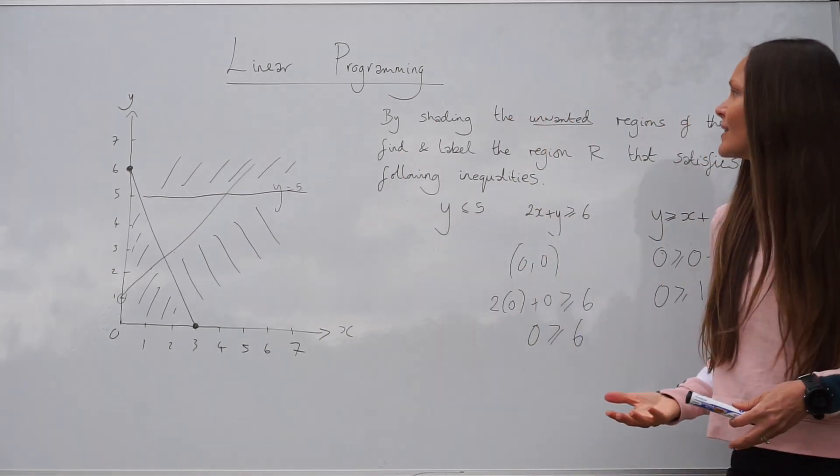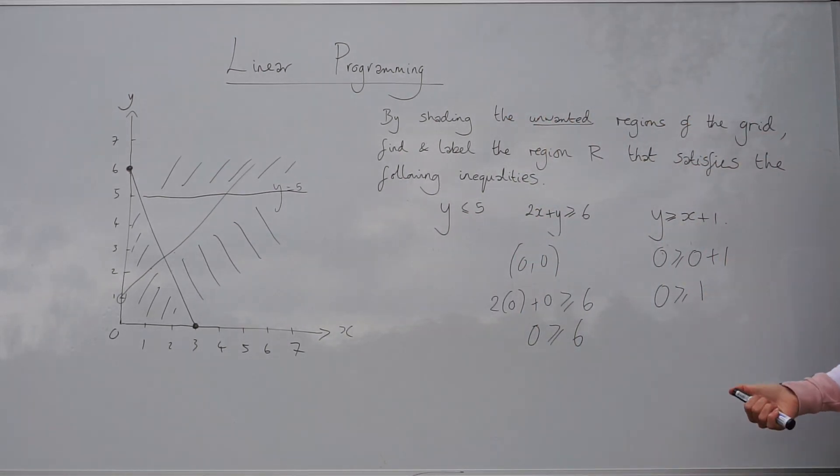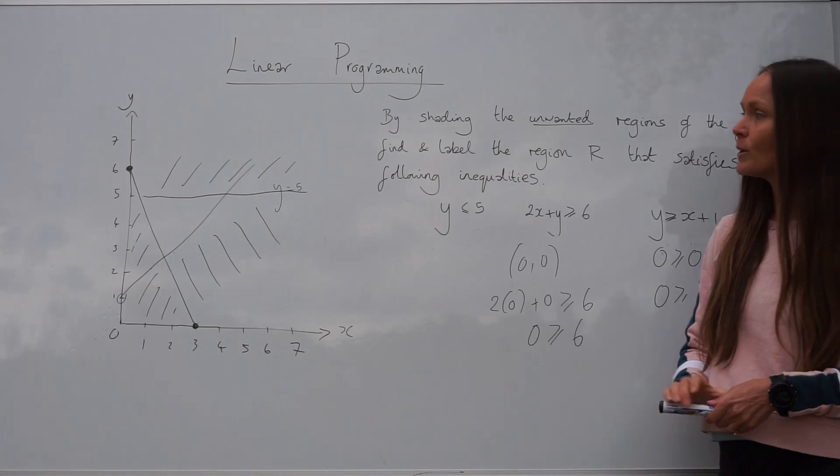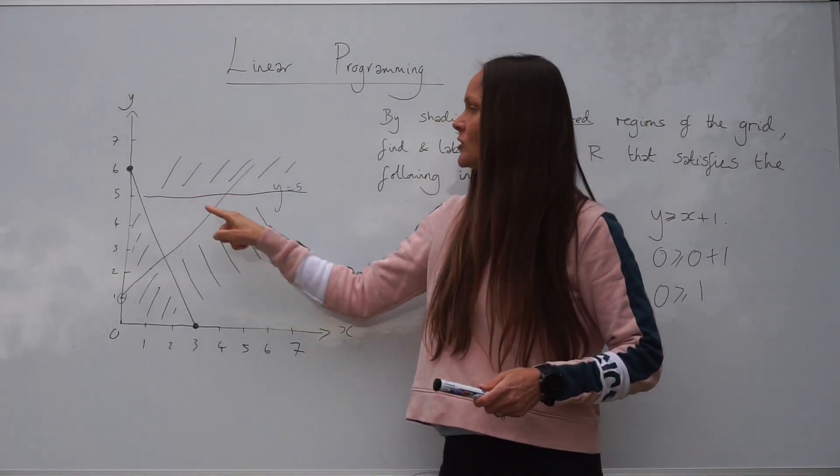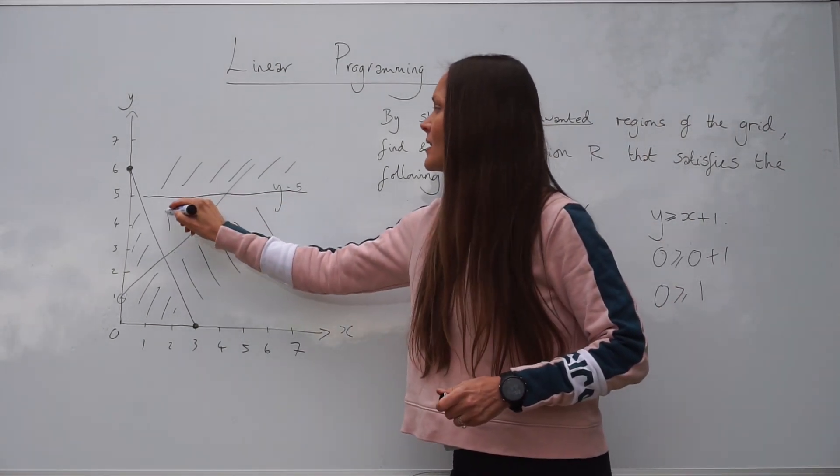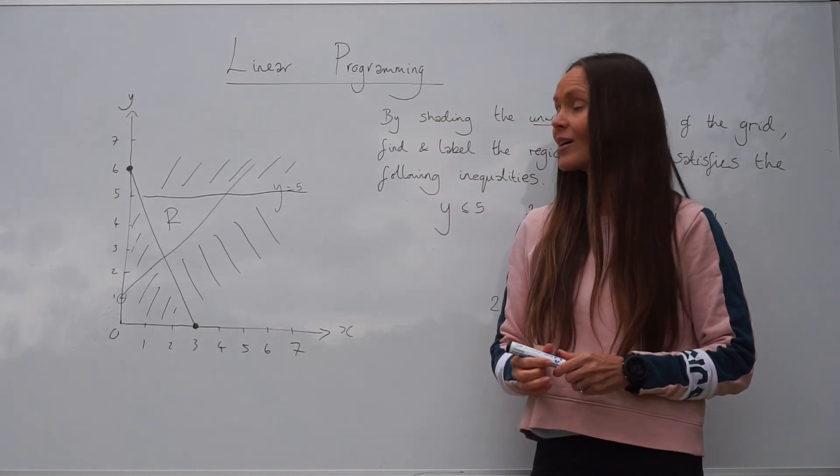So we've done all the shading. We've shaded the unwanted regions of the graph, and we're left with this triangle here, that's unshaded. So this is region R. So that's it.